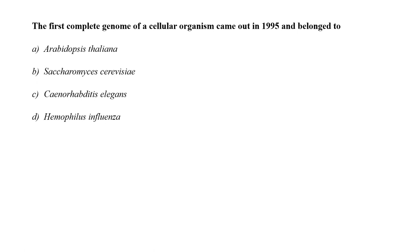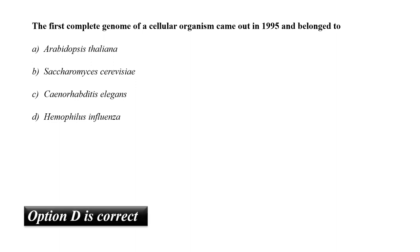The first complete genome of a cellular organism came out in 1995 and belonged to A. Arabidopsis thaliana, B. Saccharomyces cerevisiae, C. Caenorhabditis elegans, or D. Haemophilus influenzae? The first organism to have its entire genome sequenced was Haemophilus influenzae in 1995. H. influenzae has a genome of 1,830,140 base pairs. So the correct answer is option D.